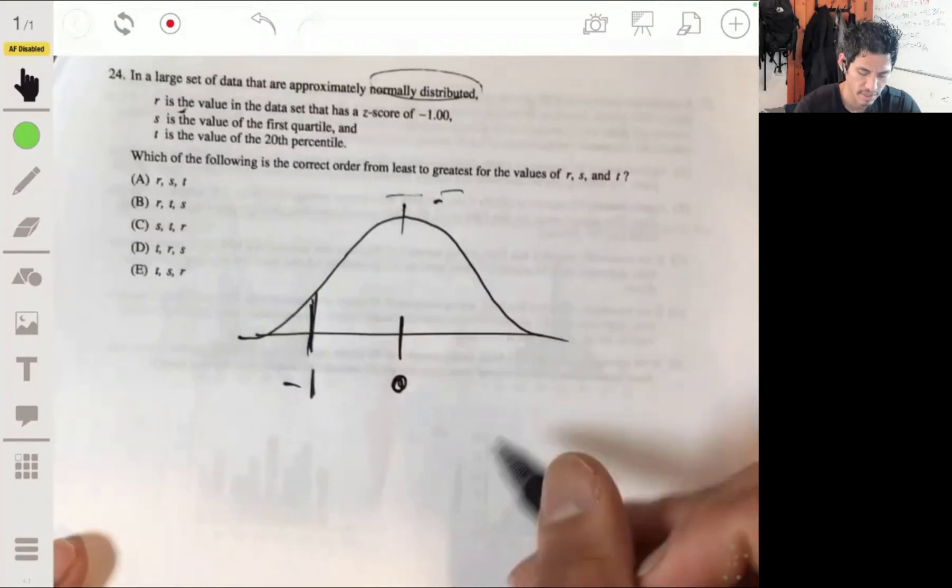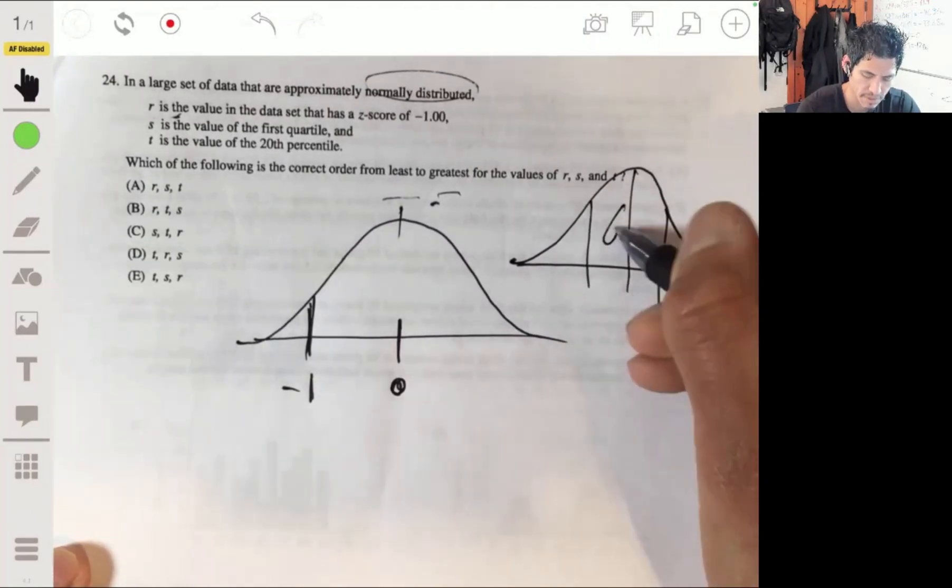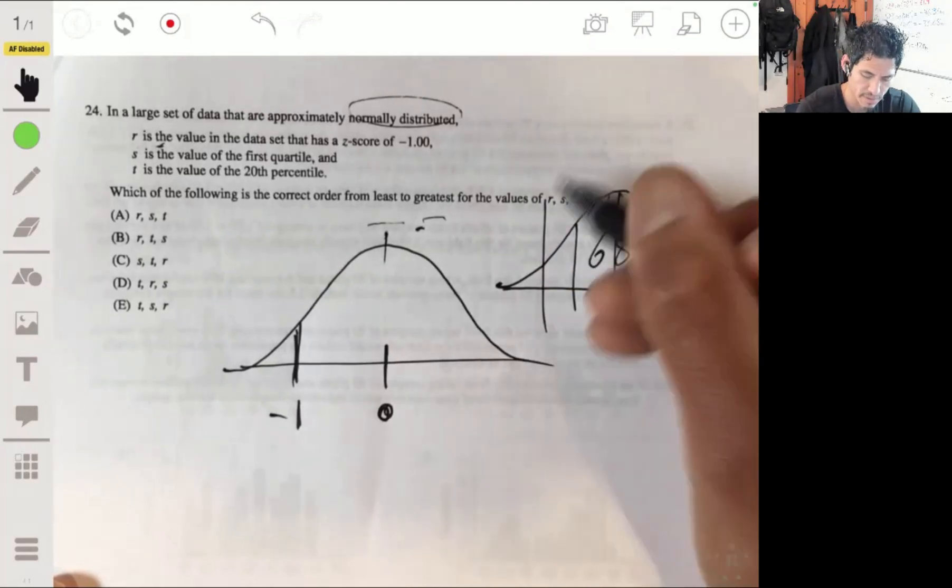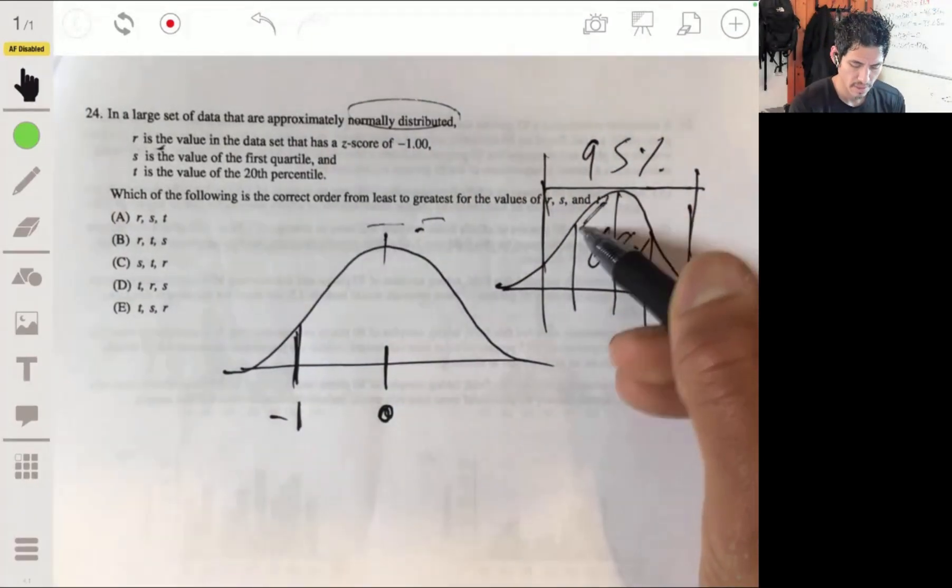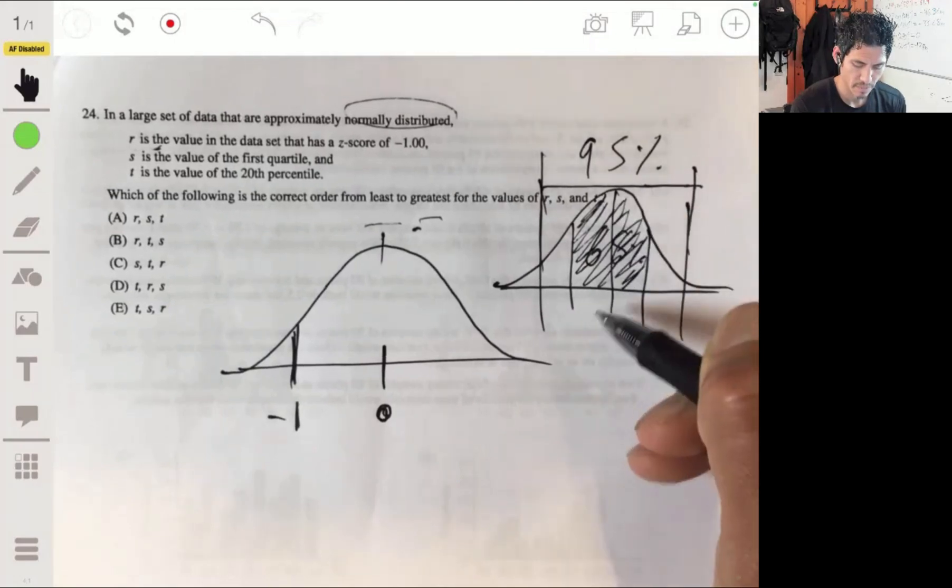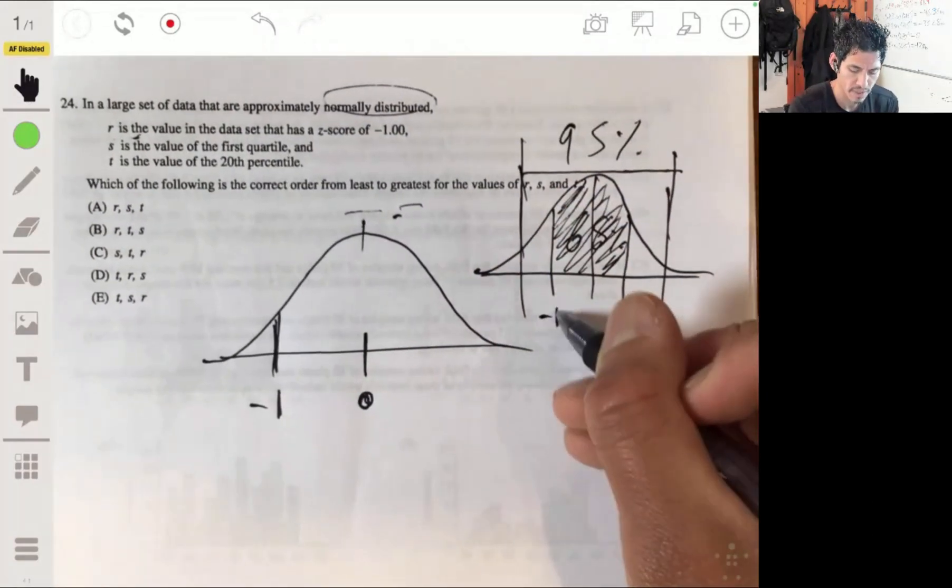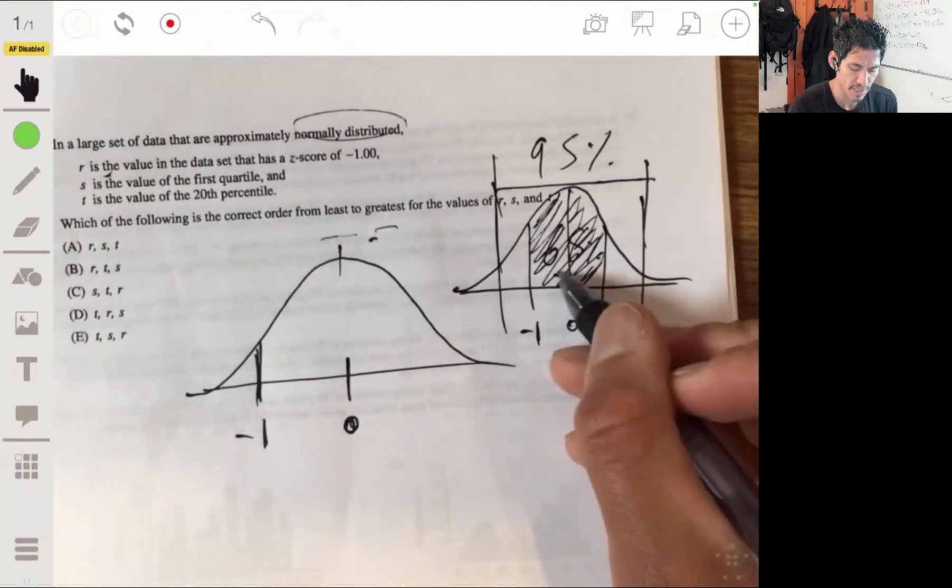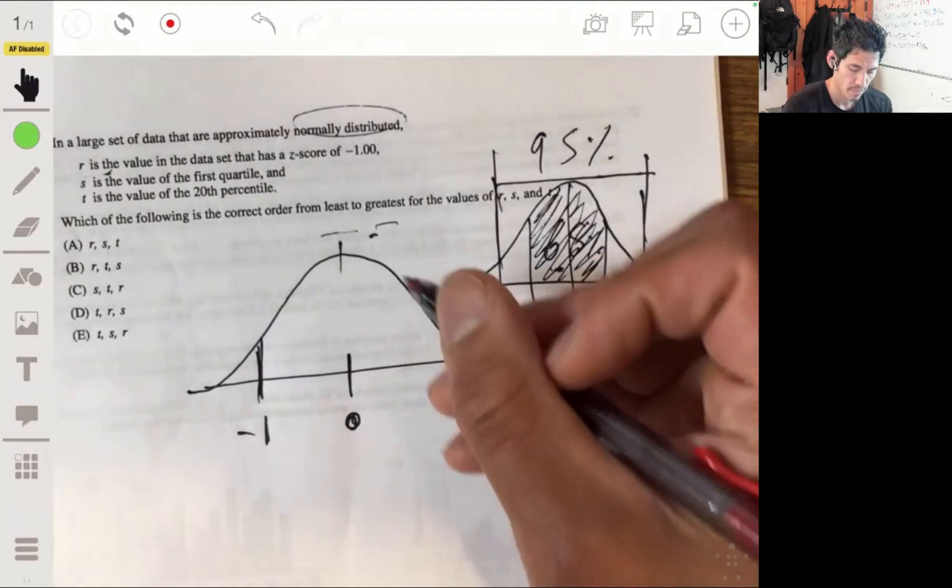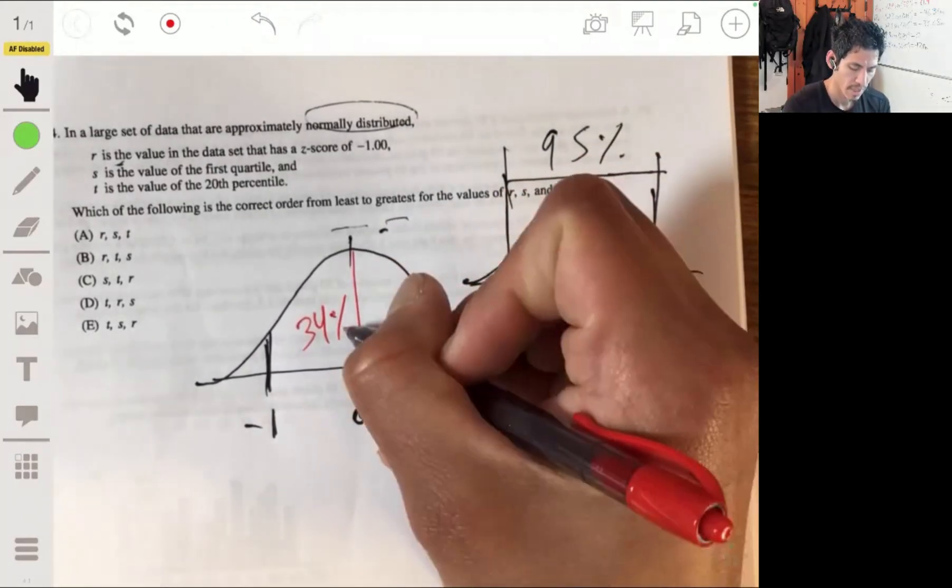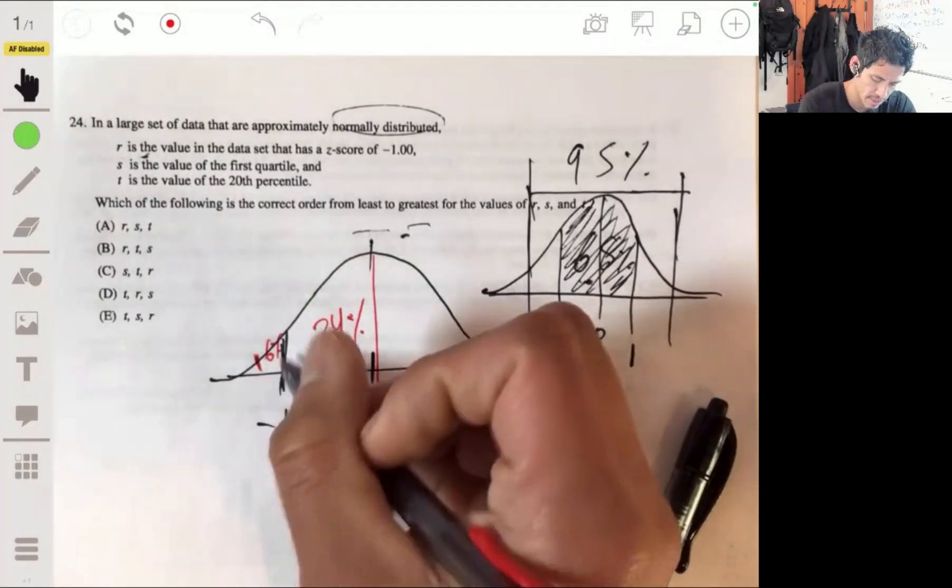So remember the z-score table is centered at 0 here. So negative 1 is going to be somewhat to the left. Now if you remember the 68-95-99.7 rule, 68% is within one standard deviation. 95% is within two standard deviations. 99.7% is within three. So within one standard deviation, 68% is from the negative side to the positive side. That means 34% is over here. And that means there's 16% here. So this is where R is going to be. R is going to be at this point there.